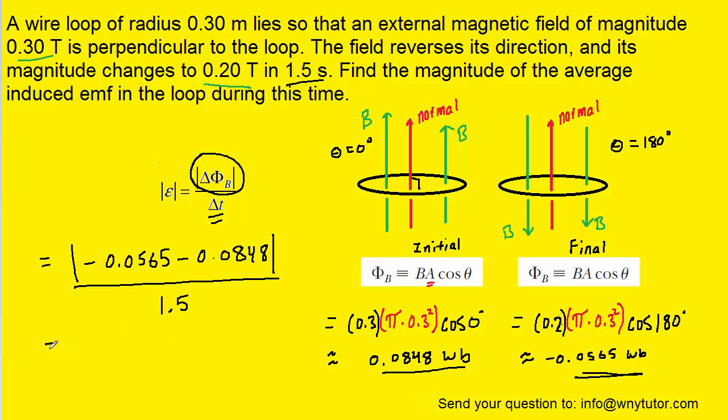And when you plug in the known values and compute this, you should get approximately 0.094 volts, or if you wanted to convert that into millivolts, you can move the decimal over three places to the right, and that would give you approximately 94 millivolts. Either answer, of course, would be acceptable.